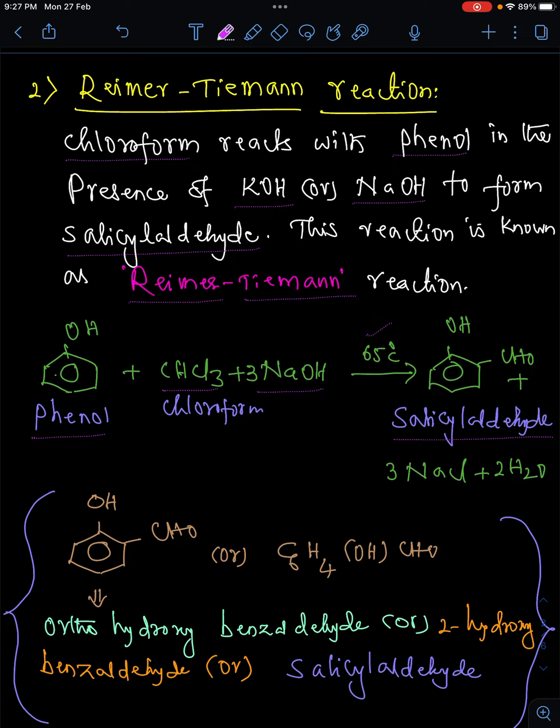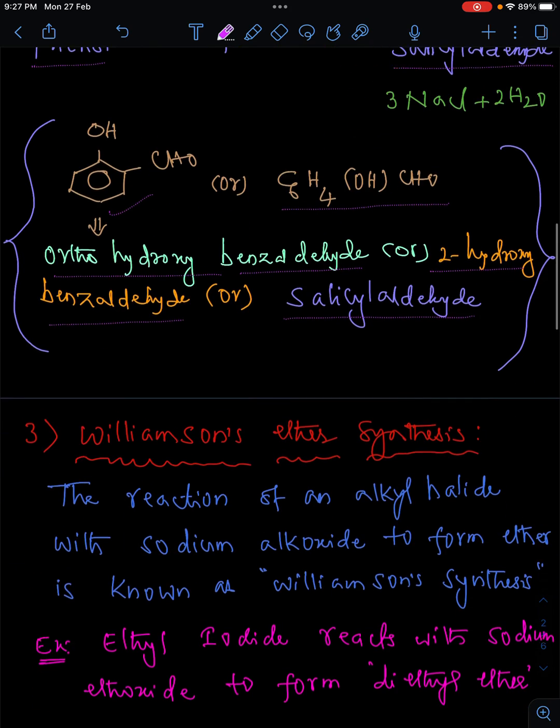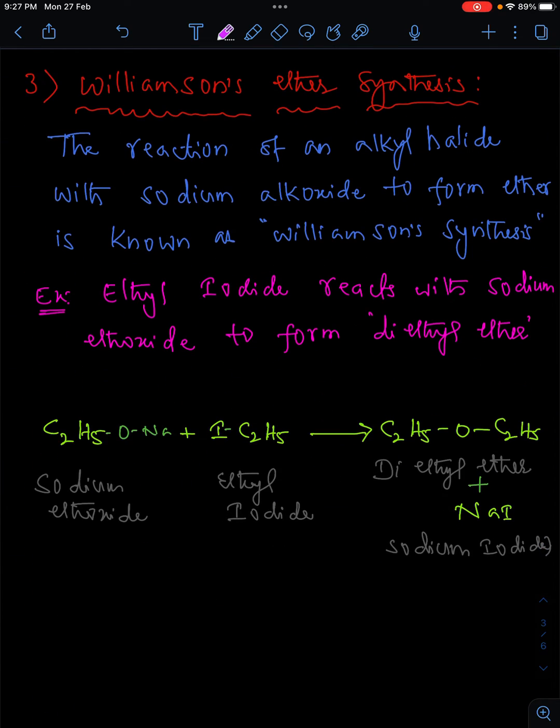Which is also called ortho hydroxy benzaldehyde. Here salicylaldehyde is represented in the form of formula as C6H4(OH)(CHO), which is called ortho hydroxy benzaldehyde or 2-hydroxy benzaldehyde, and the common name of the compound is salicylaldehyde. Next, third one is Williamson's ether synthesis.